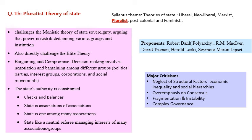Let us now look at the second question. Recall: Question 1 is the most important compulsory question, with five sub-parts, each to be written in 150 words. This second sub-part, 1B, is: 'Pluralist theory of state.'